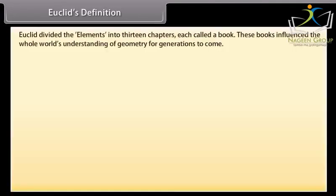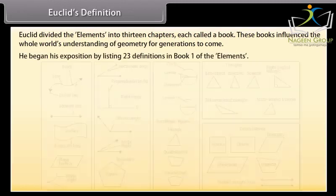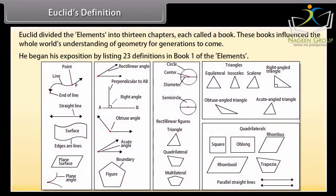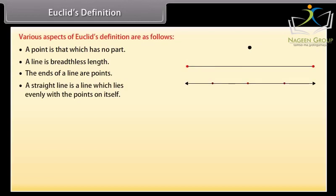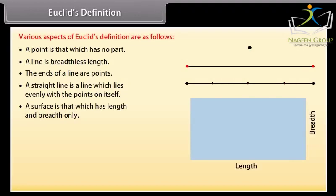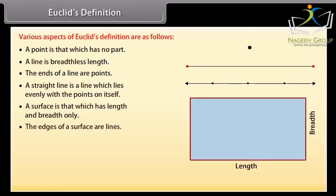Euclid's definition. Euclid divided the elements into 13 chapters, each called a book. These books have influenced the whole world's understanding of geometry for generations to come. He began his exposition by listing 23 definitions in book 1 of the elements. A few of them are: a point is that which has no part, a line is breadthless length, the ends of a line are points, a straight line is a line which lies evenly with the points on itself, a surface is that which has length and breadth only, the edges of a surface are lines, and a plain surface is a surface which lies evenly with the straight lines on itself.